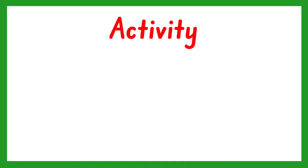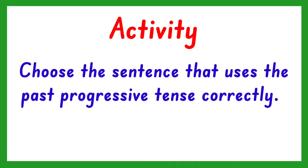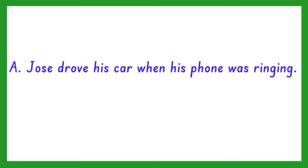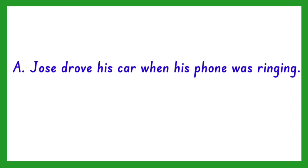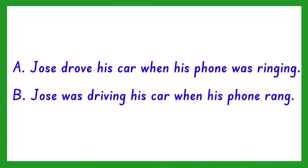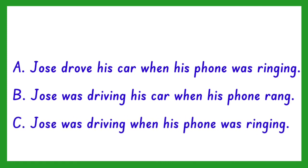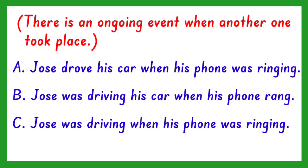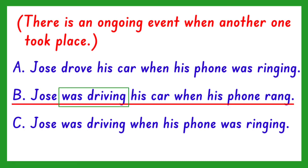Now let us have an activity. Choose the sentence that uses the past progressive form of the verb correctly. Number 1. A: Jose drove his car when his phone was ringing. B: Jose was driving his car when his phone rang. C: Jose was driving when his phone was ringing. Since there was already an ongoing event when another one took place, the answer is B. The first event takes the past progressive form, and the second event takes the simple past form.